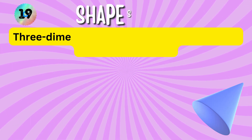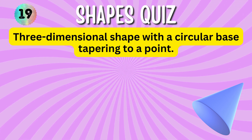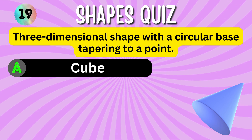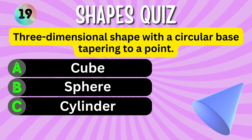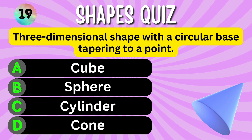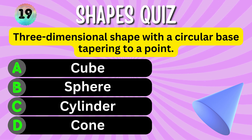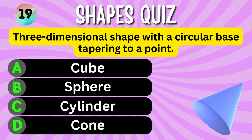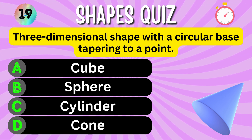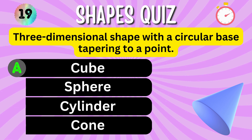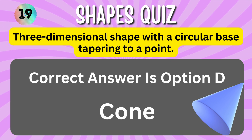Three-dimensional shape with a circular base tapering to a point. Option A. Option B. Option C. Option D. You have 5 seconds to choose the correct answer. Your time starts now. The correct answer is Option D, Cone.